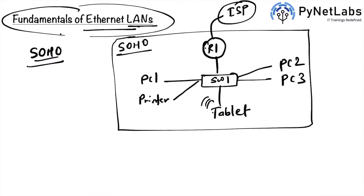Traffic always goes from, say, PC1 to the switch, then to the gateway, and then the gateway forwards data out to the ISP. Return traffic comes back on the router, which forwards it to the switch, and the switch sends it back to the originating device. This is how communication works in a SOHO network.